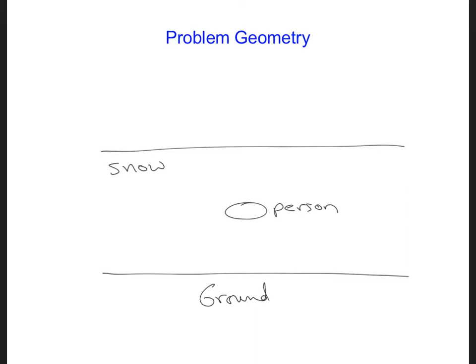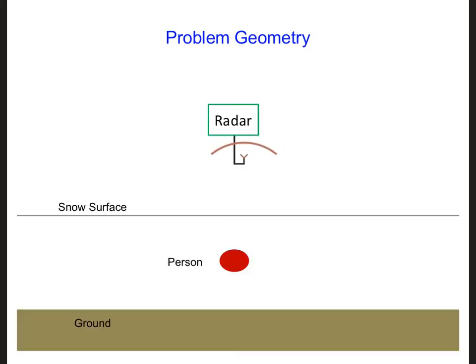For our monostatic radar system, we might imagine having the radar antenna above the snow, pointing downward. So we might imagine a scenario like this. It would also be helpful to be able to move this radar system across the snow in order to scan for any people buried in the snow.